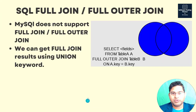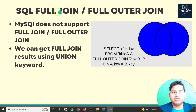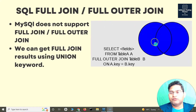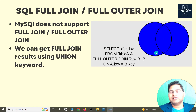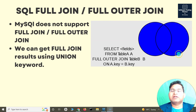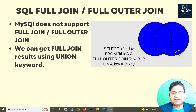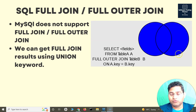Looking at this page, you can see the full join diagram: first the intersection, then anything remaining in the left-hand side table, then anything remaining in the right-hand side table. Full join and full outer join are the same thing. I hope this was helpful — thank you very much for watching.